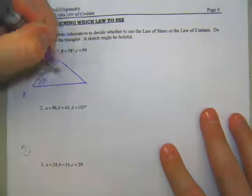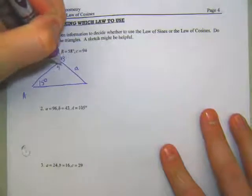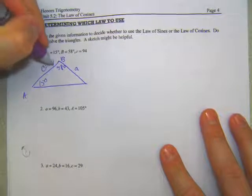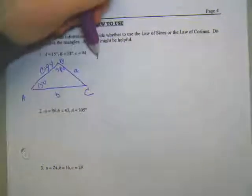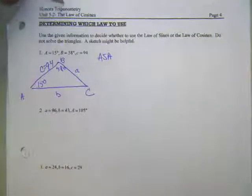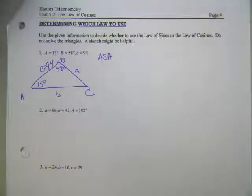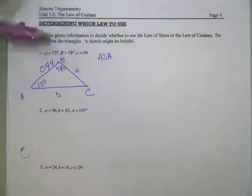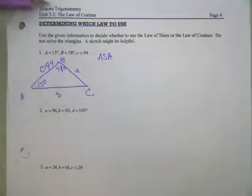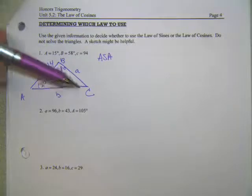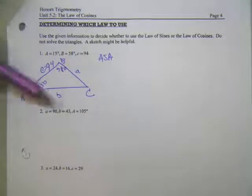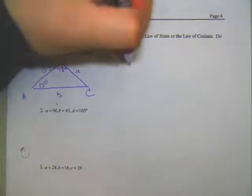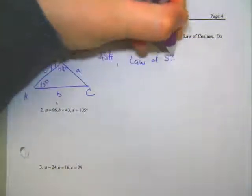So here's angle A, which is 15 degrees. Angle B is 58 degrees. And side C over here is 94. So here's B. This is an angle side angle triangle. And just look at it. I don't have enough information to be able to use the law of cosines. Because the law of cosines means to know at least two of the sides. I only know one side here. So this is a perfect situation where I could use the law of sines because I could calculate this angle, and then I could say, you know, sine of this angle of 94 equals sine 58 over B, for example, or sine 15 over A. So this is an angle side angle triangle, which is the law of sines.